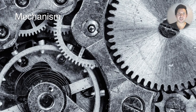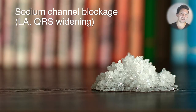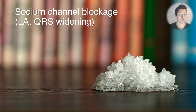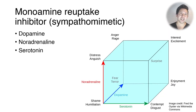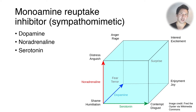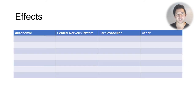The mechanism of cocaine has two main facets. One is that it causes sodium channel blockade, which is responsible for its local anaesthetic effects and also for the effects on the QRS complex in the ECG. The second is that it inhibits the reuptake of monoamines — mainly dopamine, noradrenaline, and serotonin. These are responsible for many of the other effects: the autonomic effects, the cardiac effects, and the psychological effects that cocaine has.